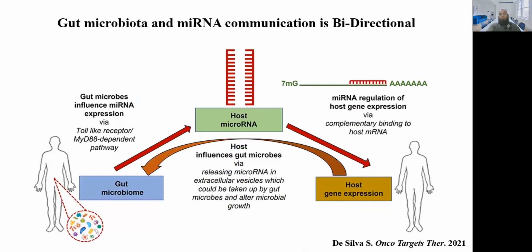If specific probiotics are used, they can change the gut microbiome. When there is a change in the gut microbiome, there will be a changed production of specific miRNA — through specific metabolites — which can then influence the host. So there will be an effect in the form of specific miRNA production from a differential gut microbiome due to the administration of specific probiotic strains.